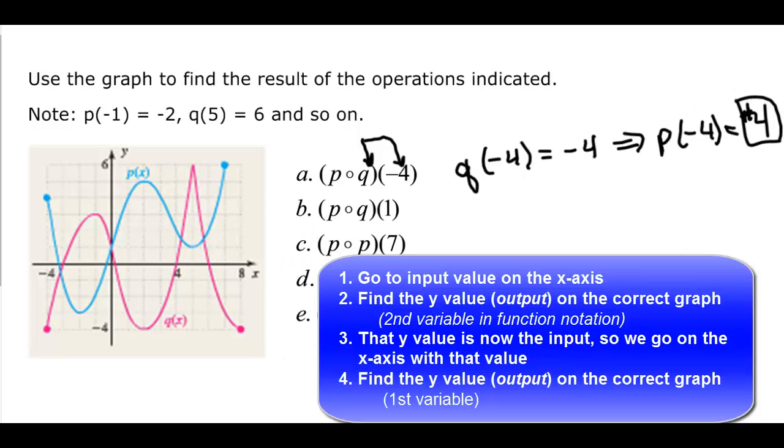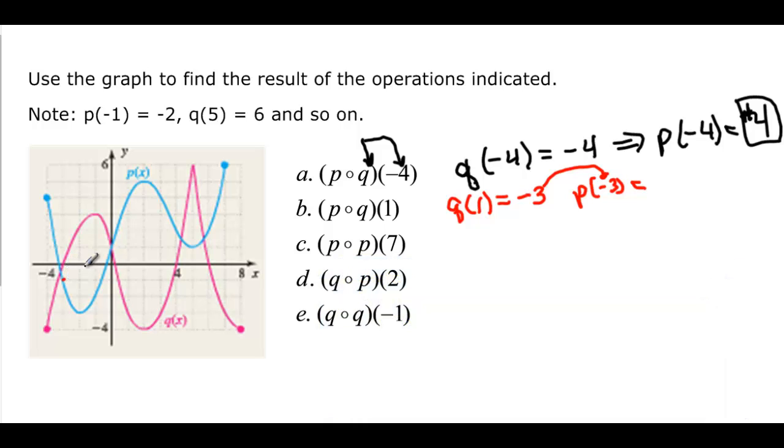So let's try again. Okay, so q of 1, I come over here, and q of 1 down here is 1, 2, 3, negative 3. So now I need to say p of negative 3, and so I go, x is now negative 3, the input, so 1, 2, 3, and I find, go to the blue, and I come down here and it's right here, so that would be negative 1.